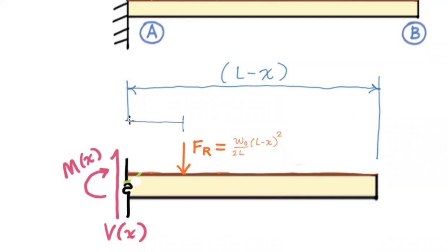We do need to get a length between the cut plane and that resultant force. And it's the third point of the distance. So this is going to be L minus x quantity divided by 3, the third point on the heavy side of that triangle.